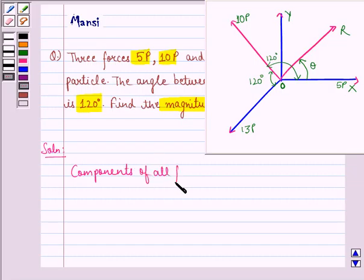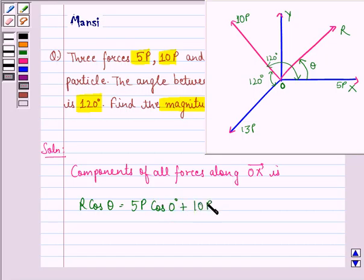R cos theta is equal to 5p cos 0 degrees plus 10p cos 120 degrees plus 13p cos 240 degrees, because these are the angles 5p, 10p and 13p make with respect to vector OX.